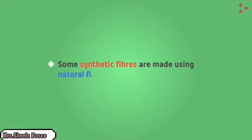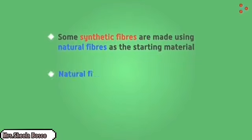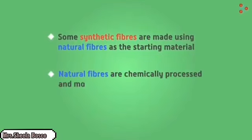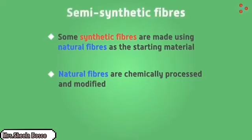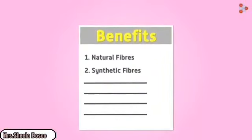Some synthetic fibers are made using natural fibers treated chemically, processed chemically, and used as artificial silk, artificial wool, and rayon. Because of all the difficulties faced with natural fibers, they take away those problems and make artificial ones.